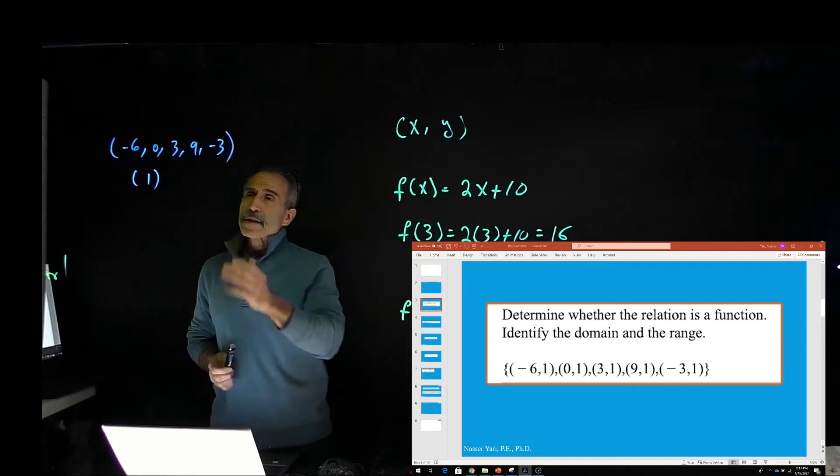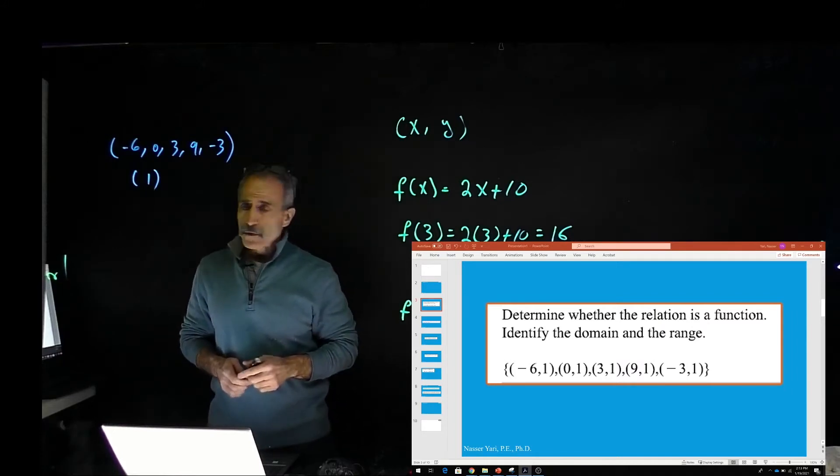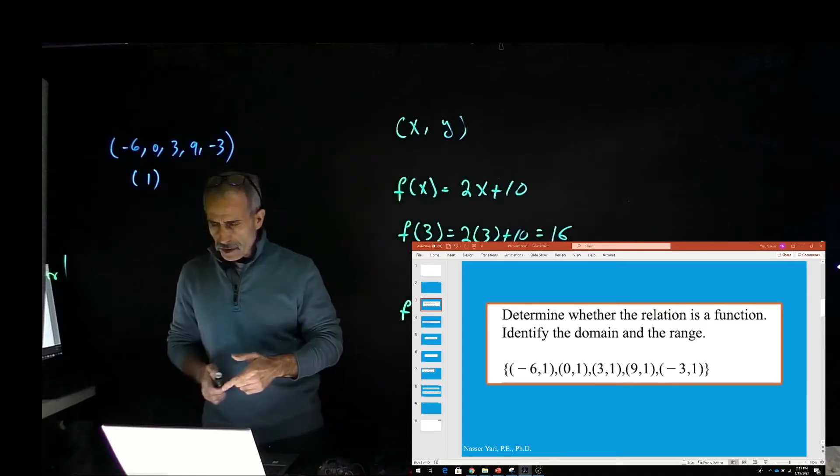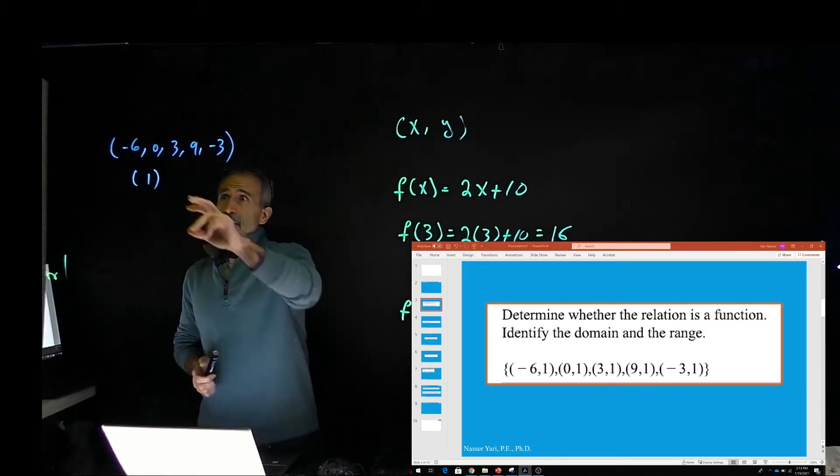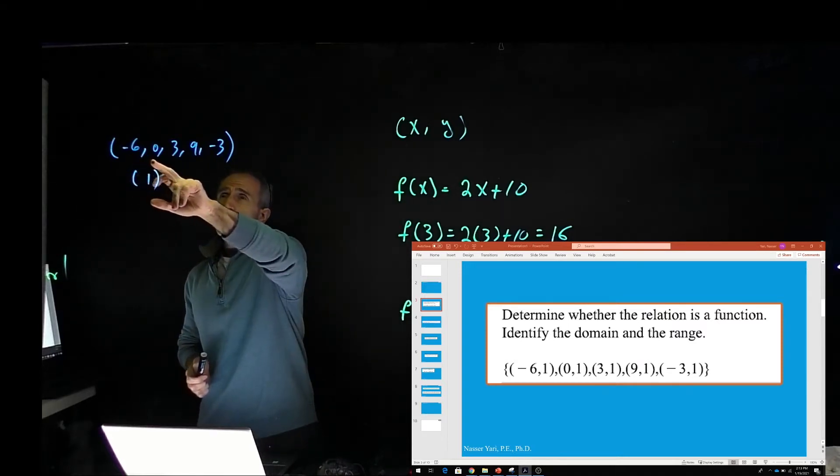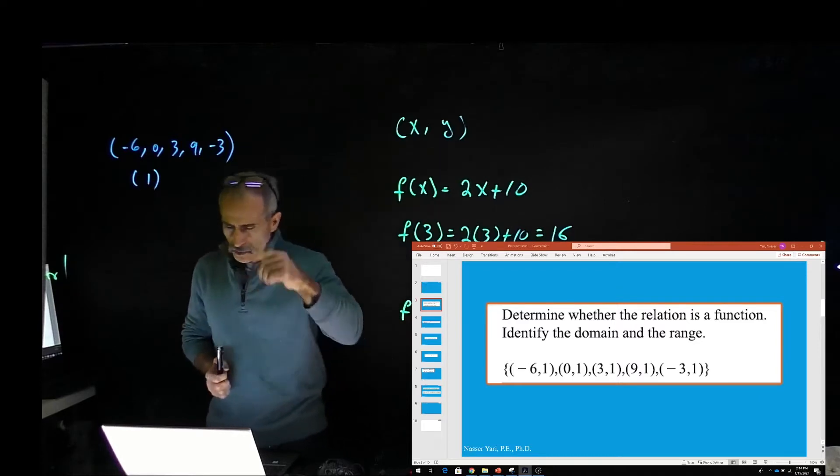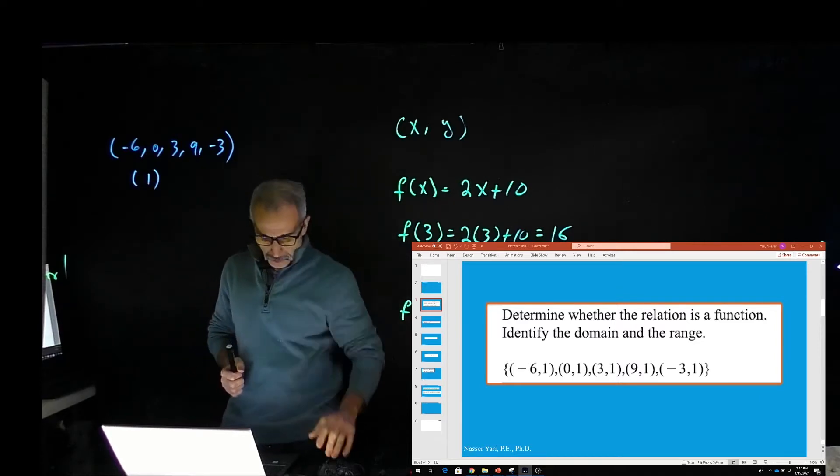So is this a function? Yes, because if we look at the numbers we have, you can see the x input. For each one of these, we have exactly one output. Now if this was reversed, it would be a different story. Let's go to the next problem, which is kind of the opposite of this one.